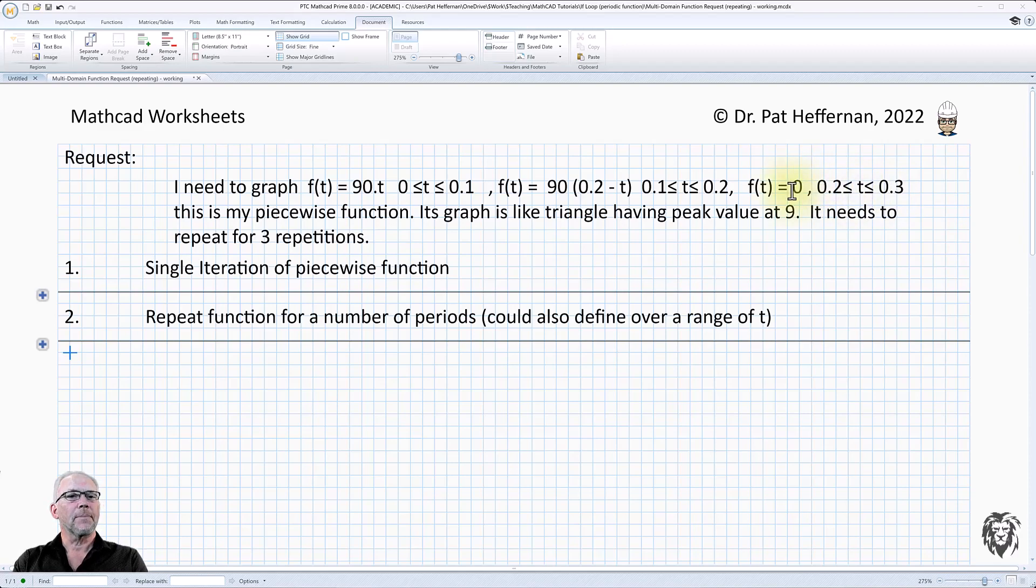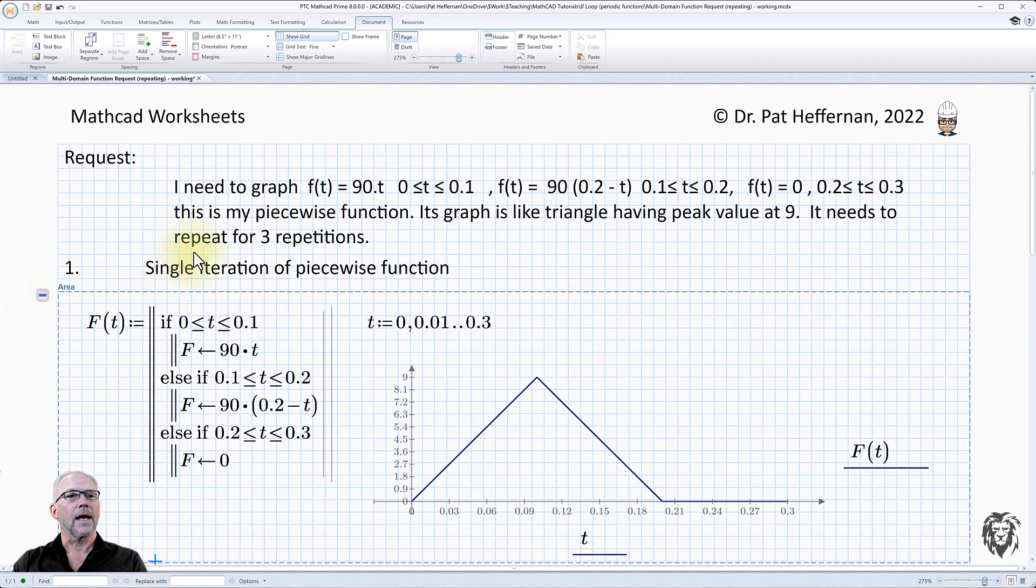So that piecewise function is no different than everything we did before. I just went ahead and solved it, and it should look something like this. I'm using the if and else if statements going down here, the three different domains, and then the functions put in assigning it to f, returning it, and we see it graphed out and we get this sawtooth pattern.